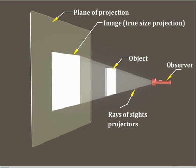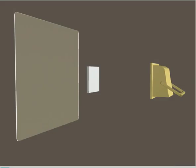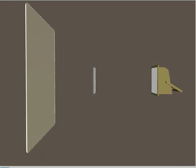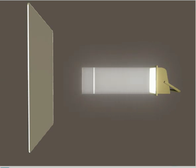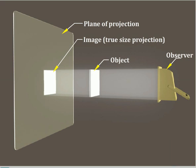In the next video, we will see about orthographic projection. Orthographic projection. In this video, let us consider the concept of orthographic projection. It is a projection method in which the rays of sight are parallel to each other and perpendicular to the plane of projection. The image will show the true size of the object.